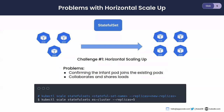So how can we implement auto-scaling on stateful workloads? When it comes to auto-scaling, the first thing that comes to mind is the HPA — the Horizontal Pod Autoscaler. But there are a few issues with horizontal scaling on stateful workloads. For this discussion, we will talk more specifically about databases, since KubeDB is a database product and databases are a good example of stateful workloads.